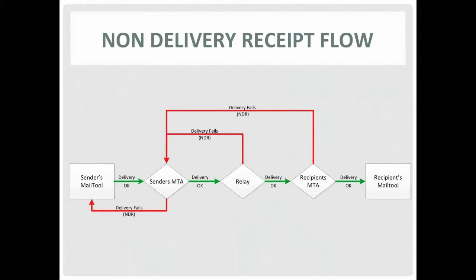The RFC requires that when a temporary failure code is received by the sending MTA, delivery attempts should be continued for five days. Then if the message is still undeliverable after five days, it should be returned to the sender along with the delivery code. Note that these time periods of four hours and five days are standards defined by the RFC, but they are sometimes modified by a clueless email administrator, so you can't depend on them 100%.